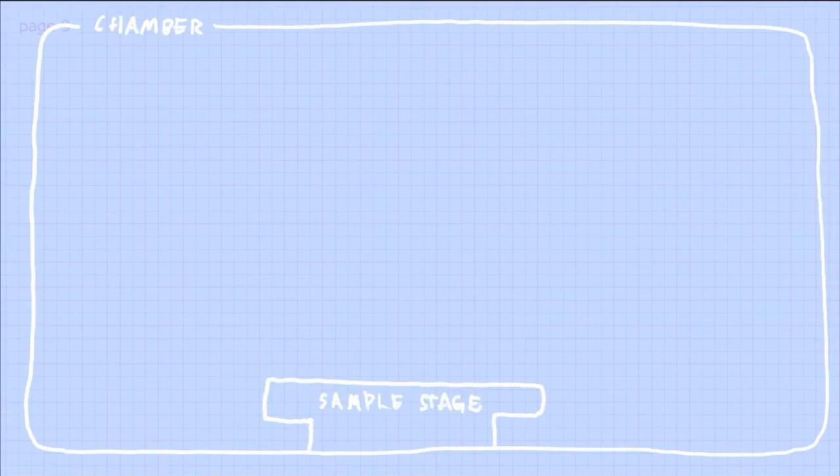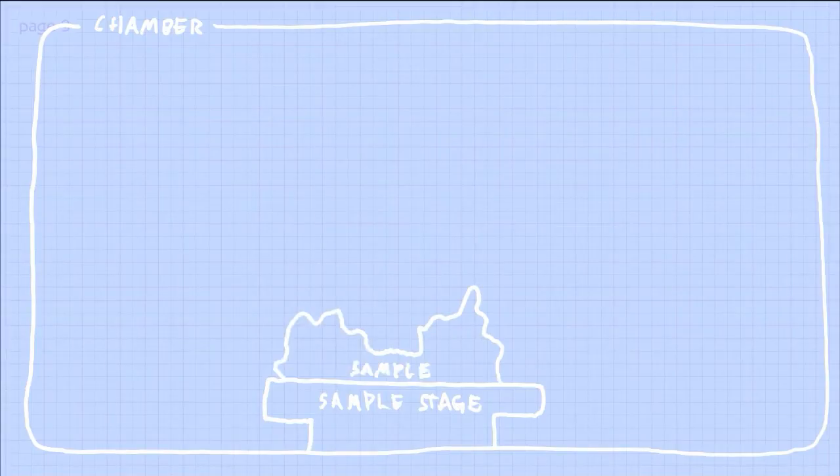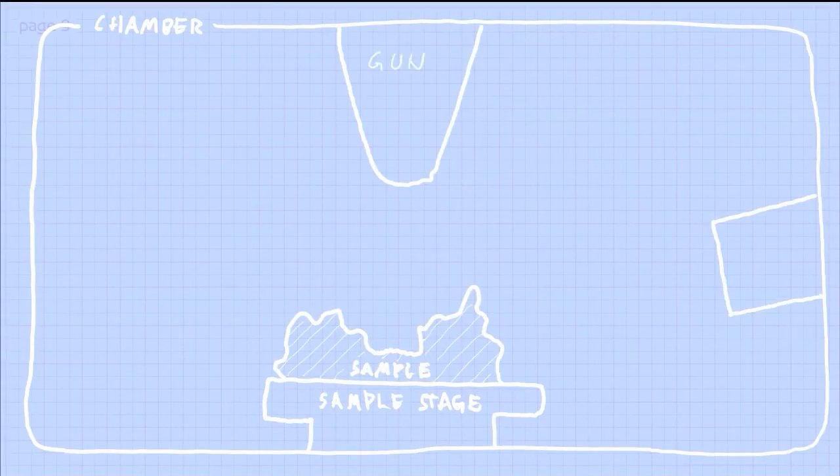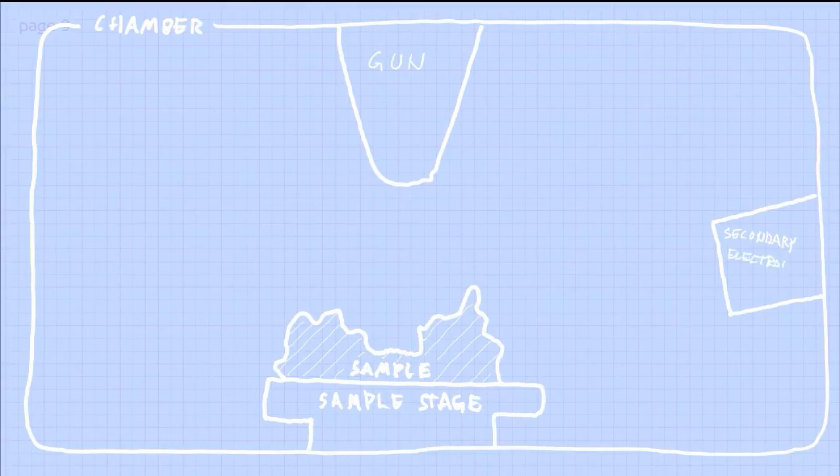So here I draw a vacuum chamber of the microscope. And in the bottom I have the sample stage that we can move around with the sample on top. At the top and at the right side we have the gun respectively the secondary electron detector.